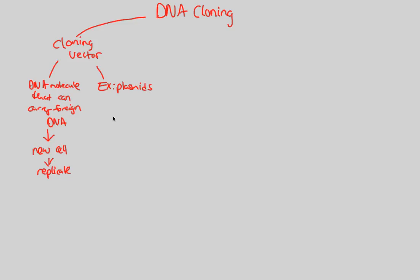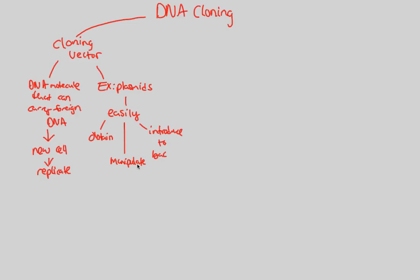A perfect example of a cloning vector are plasmids. Plasmids are beautiful cloning vectors within E. coli because they are very easily obtained, very easily manipulated — just like we did, cutting them with restriction enzymes and pasting a gene of interest into them — and it's very easy to reintroduce them back into bacteria. So we used E. coli's bacterial plasmid as a vector, turned it into a recombinant DNA molecule, put it back into our cell, and allowed it to replicate.